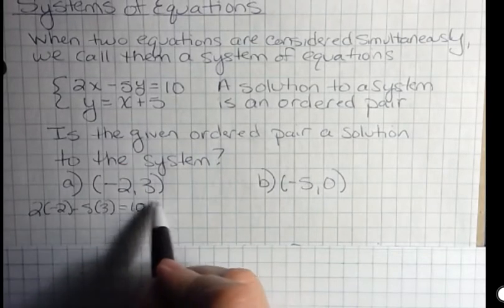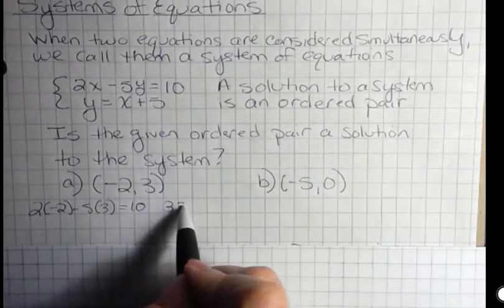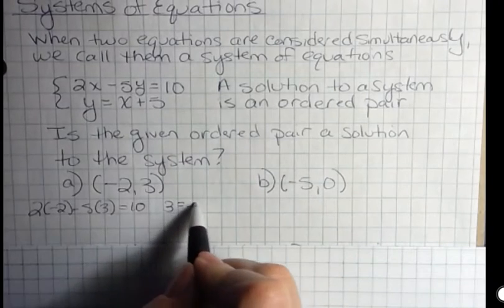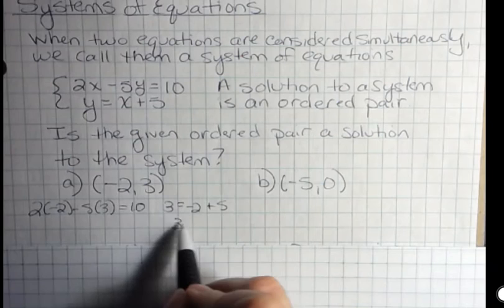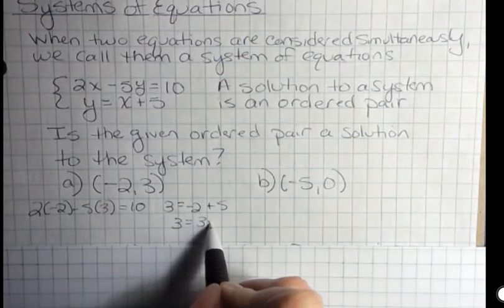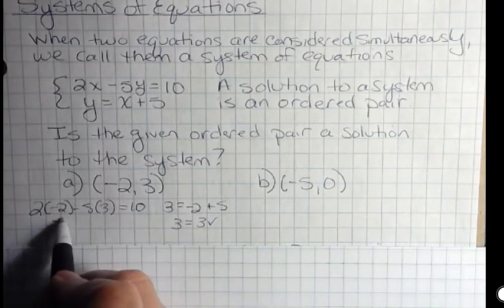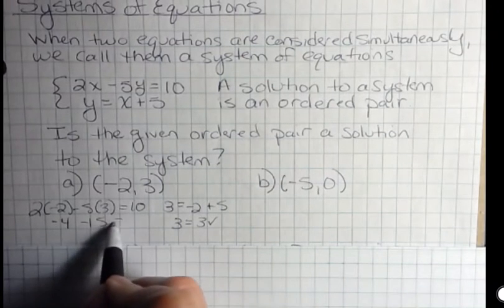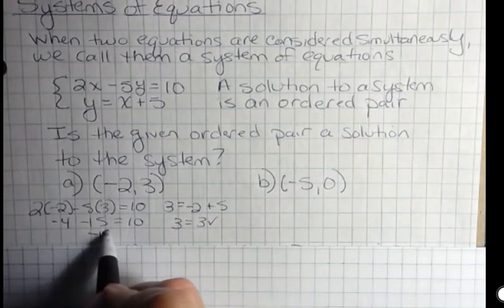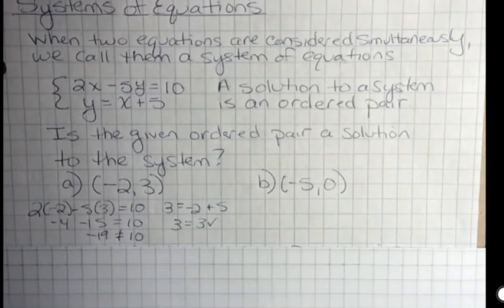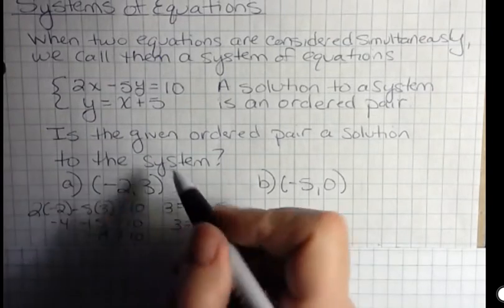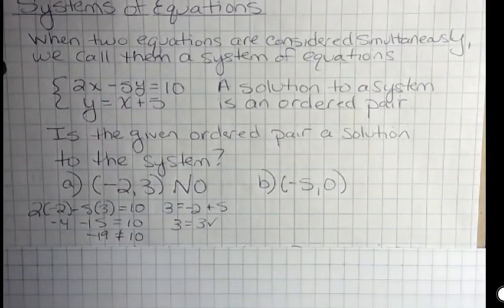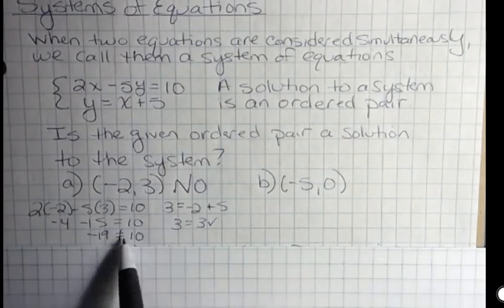And for the second one I'm going to say y equals negative two plus five. Well, over here I can see that three equals three, that's true, and over here I have negative four minus fifteen, that does not equal ten, negative nineteen does not equal ten. So in order for this to be a solution to the system, it has to be true for both equations. So this is no, it's not a solution because it only solves one of the equations and not both.